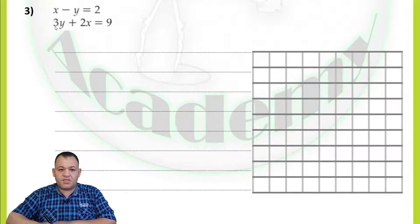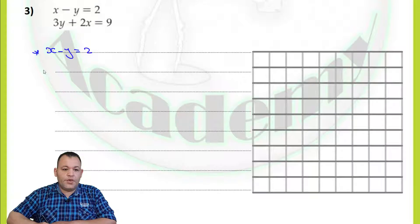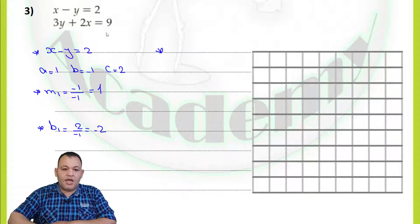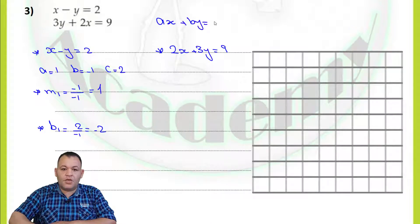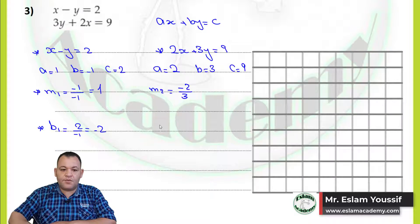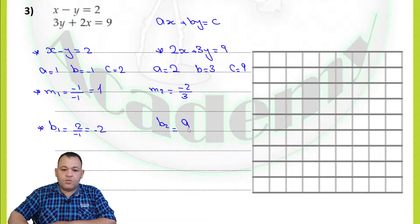In question number 3, we graph the system and find the solution: x minus y equals 2, and 3y plus 2x equals 9. From the first equation, a equals 1, b equals negative 1, c equals 2. So m1 equals negative a over b, which is negative 1 over negative 1, equaling positive 1. The y-intercept equals c over b, which is 2 over negative 1, equaling negative 2. For the second equation, rewritten as 2x plus 3y equals 9, a equals 2, b equals 3, c equals 9. So m2 equals negative 2 over 3, and y-intercept 2 equals 9 over 3, which equals 3.